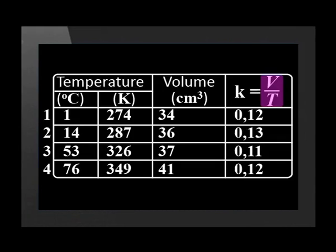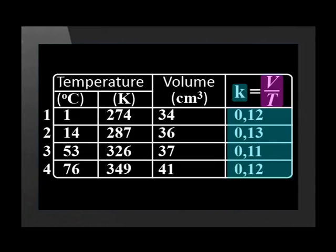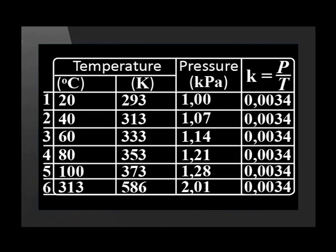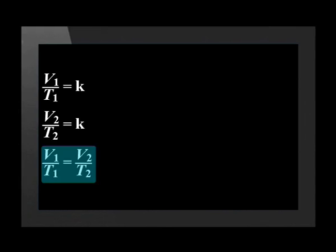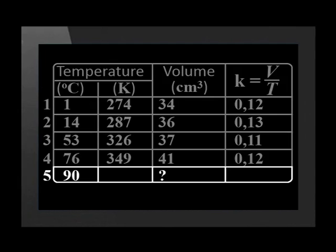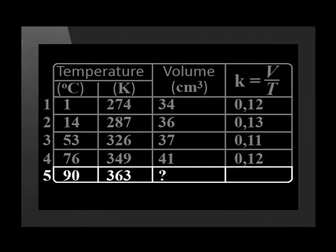Let's look at group 1's data again. Volume divided by Kelvin temperature gives a constant, if we ignore experimental error. In another lesson, we saw that pressure divided by temperature also gives a constant for an enclosed gas at constant volume, leading us to derive P1/T1 = P2/T2. We reason in the same way with this data and get the equation V1/T1 = V2/T2.